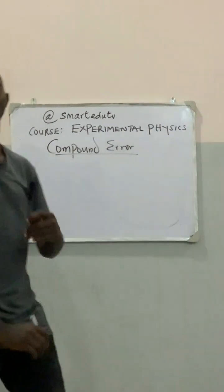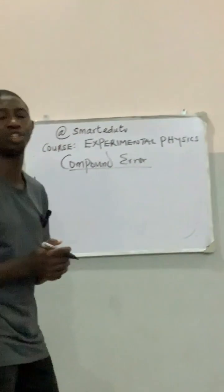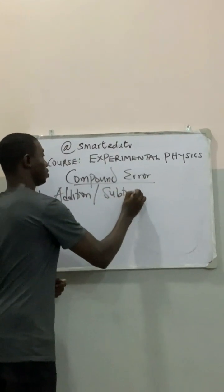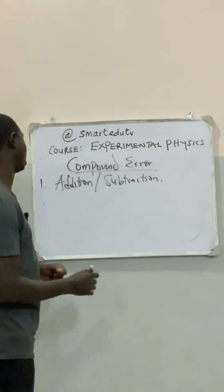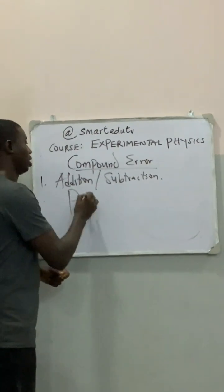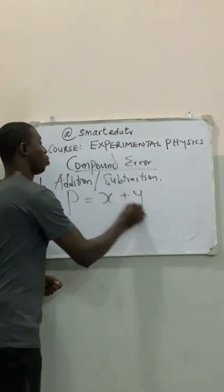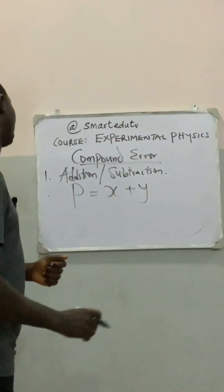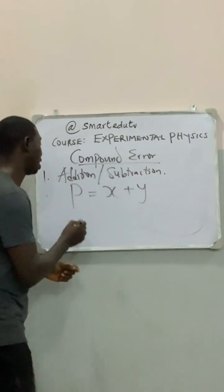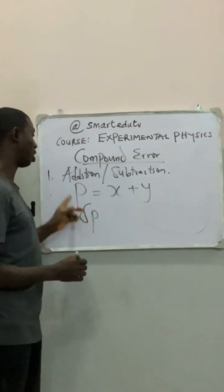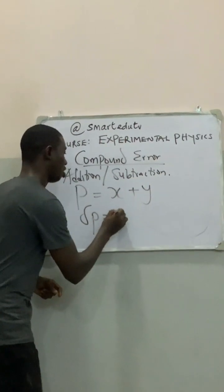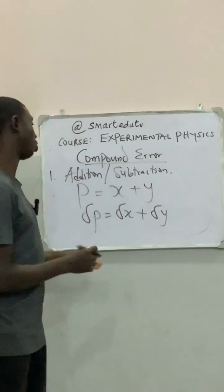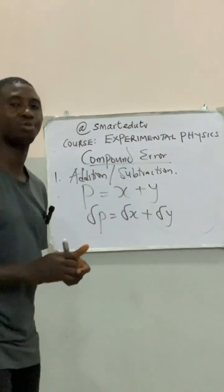The first case of compound error we are looking at is addition or subtraction. Given that P equals x plus y, the maximum error in P, denoted by delta P, is given as the error in X plus the error in Y. This is how we evaluate the maximum error in P in terms of addition.